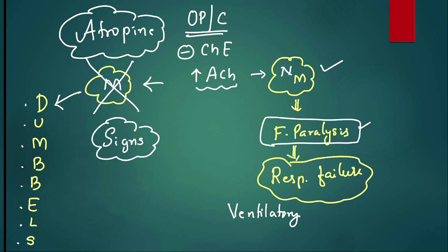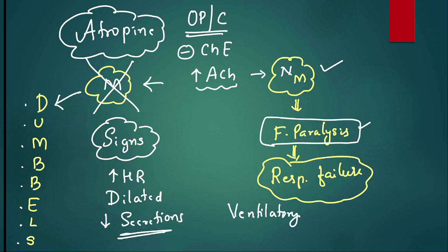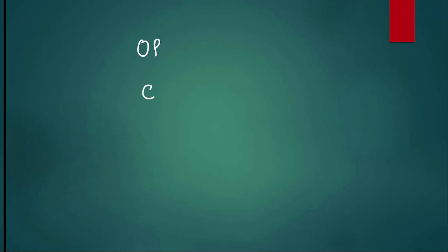Signs of atropinization — how do you know you have given adequate atropine? First, heart rate should have gone up. Second, pupil should have dilated. The most specific sign is decrease in secretions, particularly lung secretions. Another strategy is oximes like pralidoxime and obidoxime, which reactivate the enzyme but must be used within six to eight hours. Comment in the comment section: in which poisoning — OP or carbamate — are oximes not used or contraindicated?